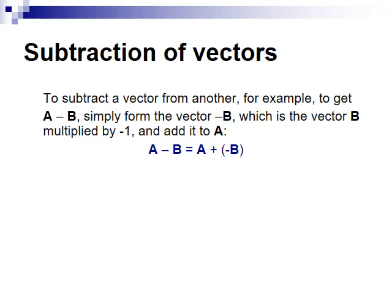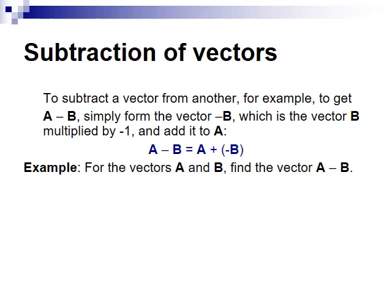To subtract a vector b from vector a, simply form the vector negative b, then add it to a. Here is an example. First, we are going to keep the vector a as is, then form the vector negative b, like so. The same magnitude, opposite direction. Then put them tip to tail, and voila, here is your a minus b vector.